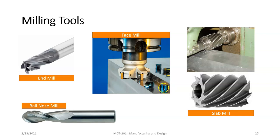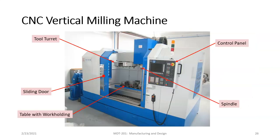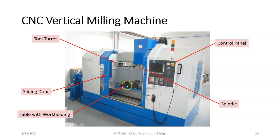Please watch the videos — there are some really awesome cool ones, including slow-motion videos of the cutting process that are mesmerizing. Looking at different milling machines, this is a CNC vertical milling machine, very similar to a CNC turning center. We have the control panel, the tool turret, a sliding door, the table for work holding, and the spindle. It's just the orientation of the spindle that matters.